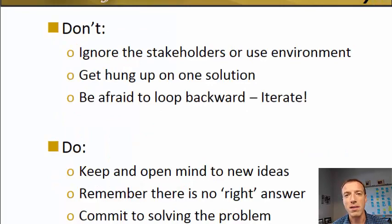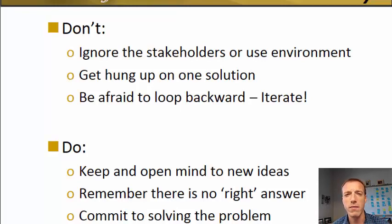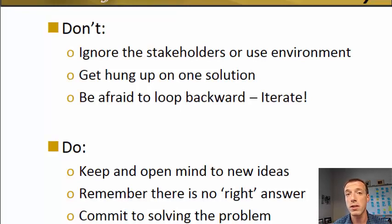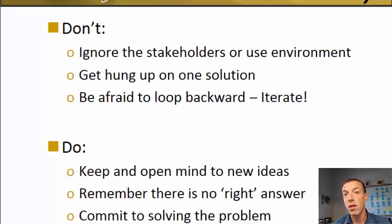Overall, in our design process, some of the things you should avoid are ignoring your stakeholders and just designing for yourself — it never goes well. Don't get hung up on one solution, especially not the first solution. Think through everything and really diverge your space. And don't be afraid to loop backward and go through all those iterations — embrace that process. Some things you should do: keep your mind open to new ideas through every phase of the process. You may choose not to take those ideas on for the sake of time or other considerations, but keep your mind open to the fact that there are other ways of doing things.